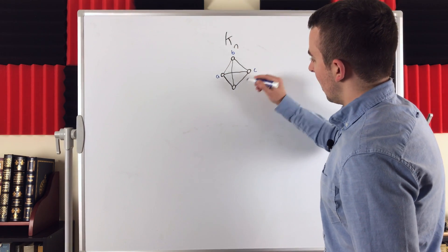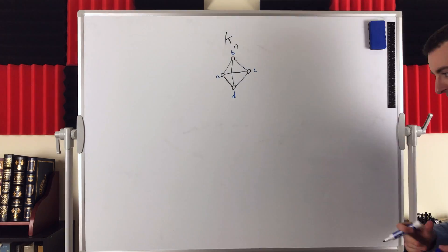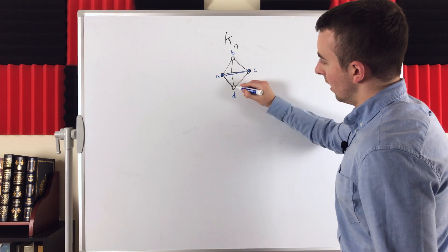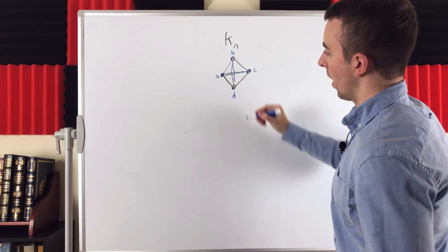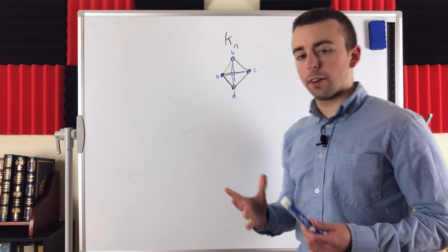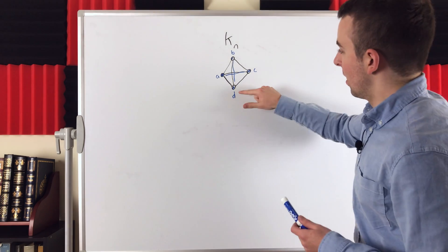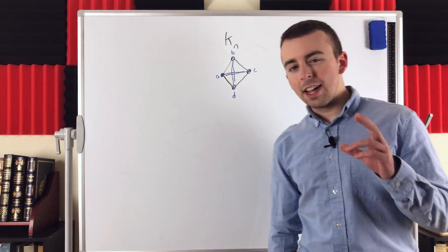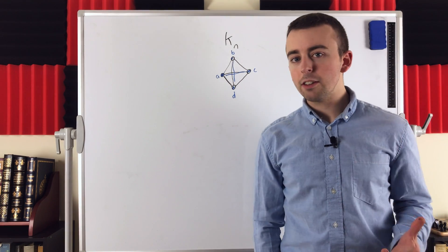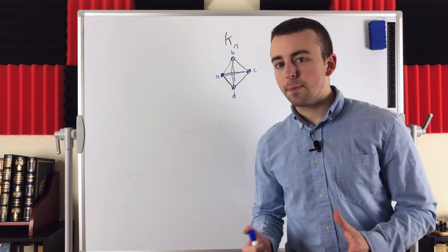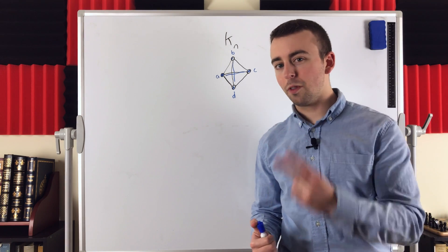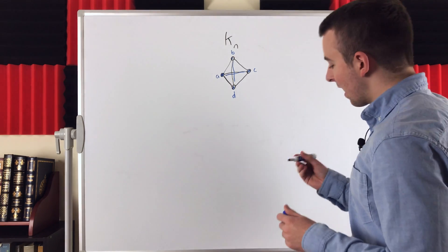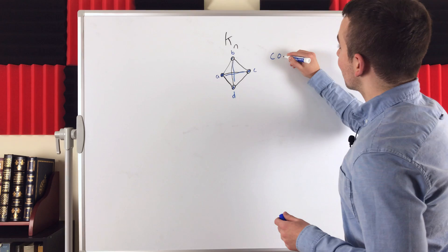Let's label these vertices A, B, C, D. If we pick any two of these vertices, say A and C, we define an edge. If we pick D and B, we define one edge. Two vertices define an edge, and the order does not matter — D, B defines the same edge as B, D. So we're trying to count the number of edges in a complete graph on n vertices, which is the same as counting the number of ways we can pick two vertices from a collection of n vertices, and perhaps that language makes you think about combinations.